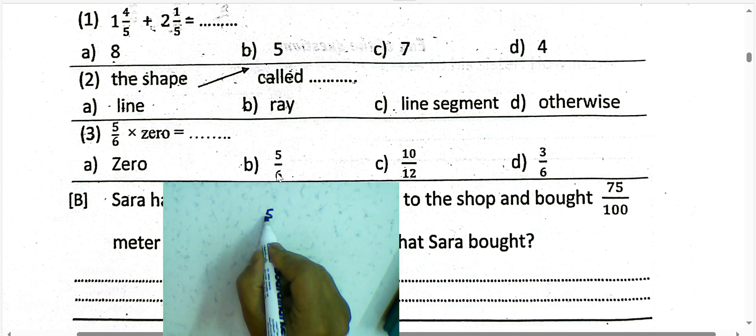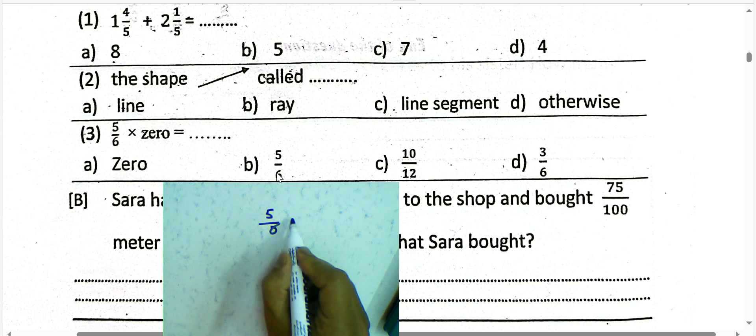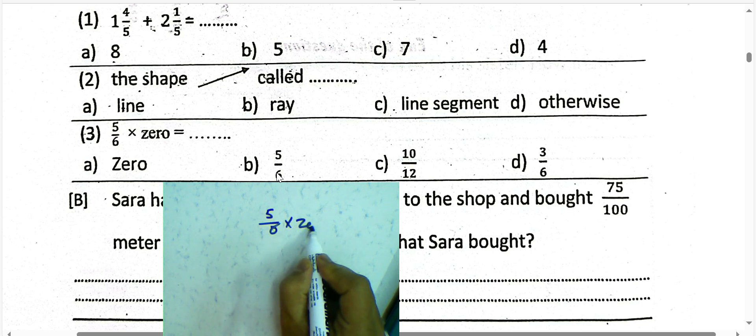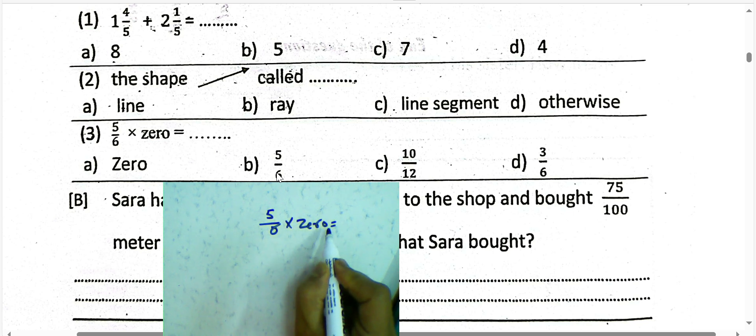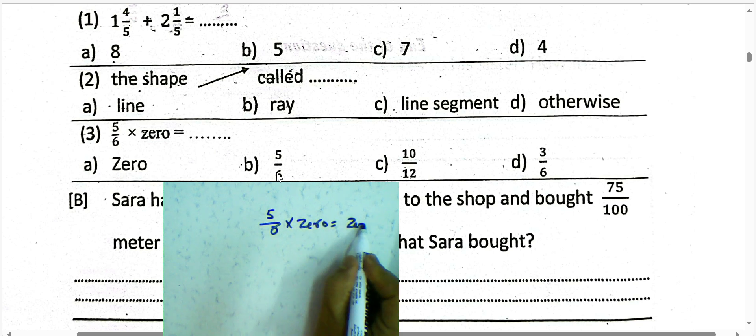Five-sixths of zero will be zero. Choose letter A.